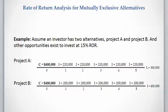Let's work on an example. Assume an investor has two alternatives, project A and project B, and other opportunities exist to invest at 15% rate of return. This 15% rate of return means we can make at least 15% on the $400,000 if we invest somewhere else — the $400,000 required for investment in project A or project B. So each of these two projects is economically satisfactory only if each gives a return higher than 15%.